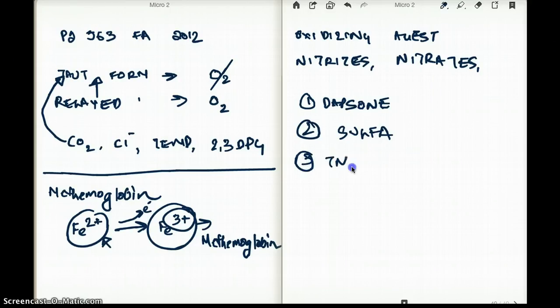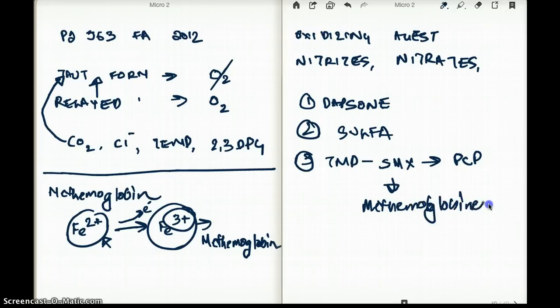Or let's say TMP-SMX, that's also a sulfa drug. Now, TMP-SMX is used to treat PCP. That's why we often see methemoglobinemia in HIV patients. That's where you see HIV patients having methemoglobinemia because we have to give them TMP-SMX to treat the PCP.